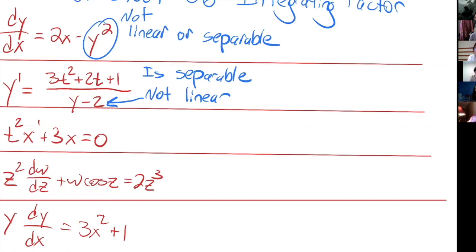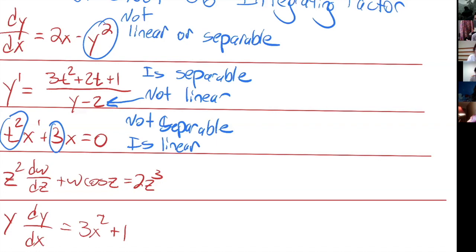For this one over here, it's not going to be separable — you can try to separate it but it's not going to work. But this one is linear. When we say linear, that just means the expression that occurs in front of each of the y's or y-primes does not depend on y. That's the case for this third one. Any questions?